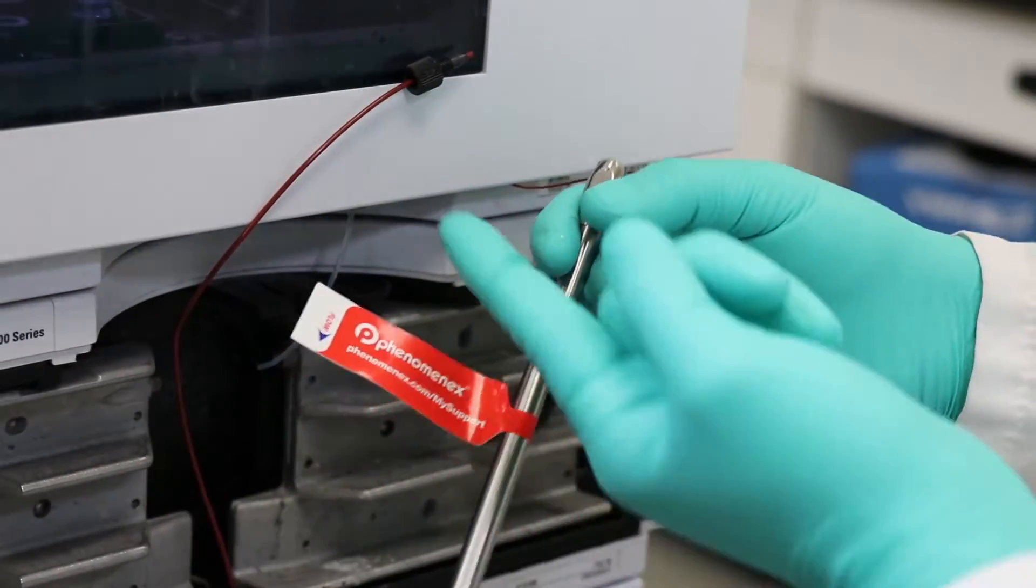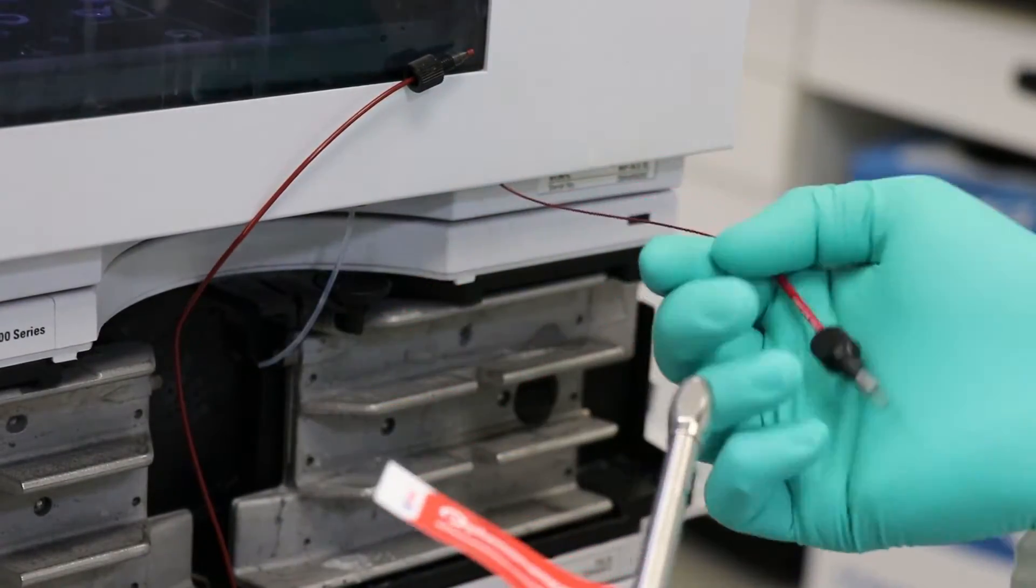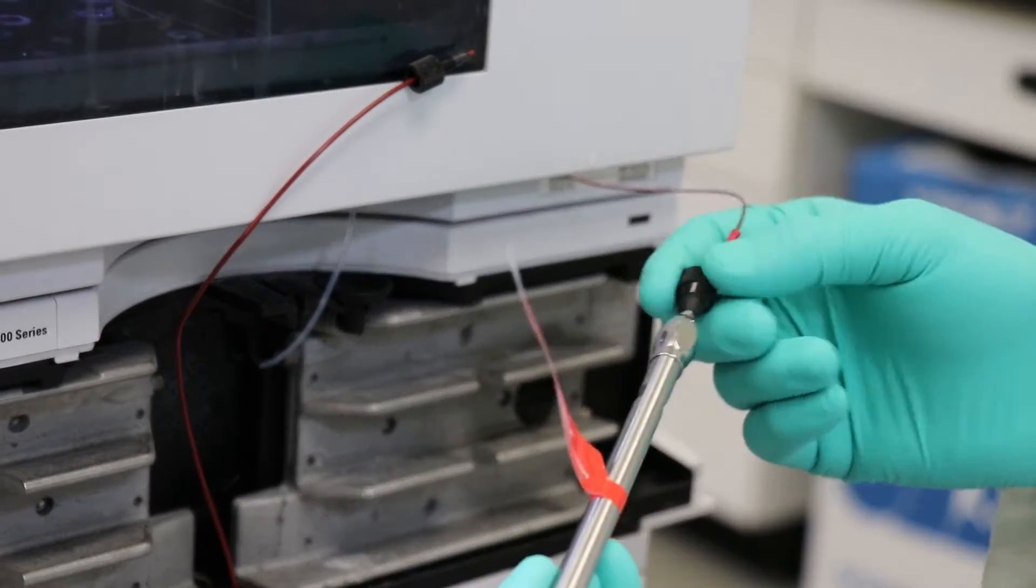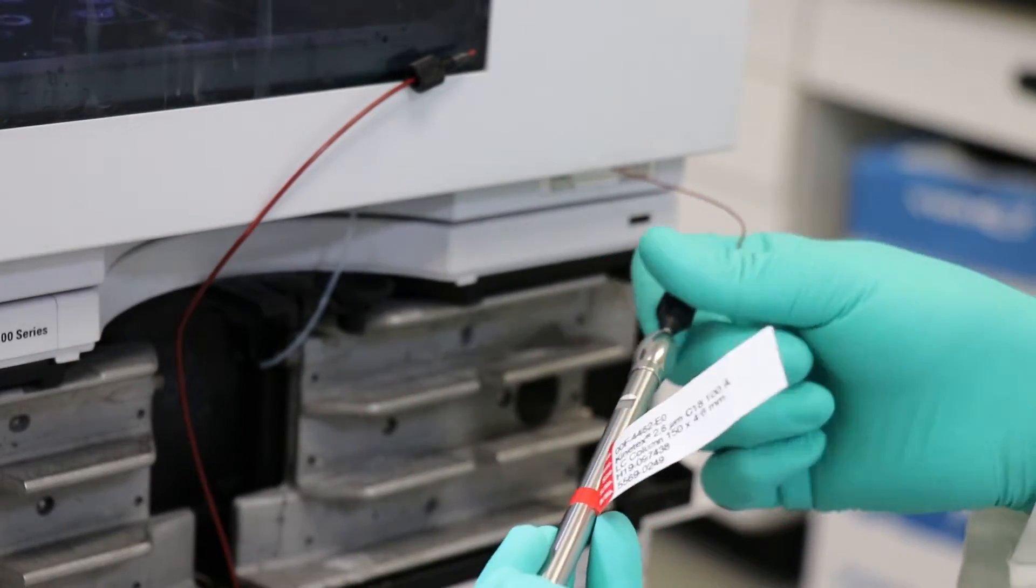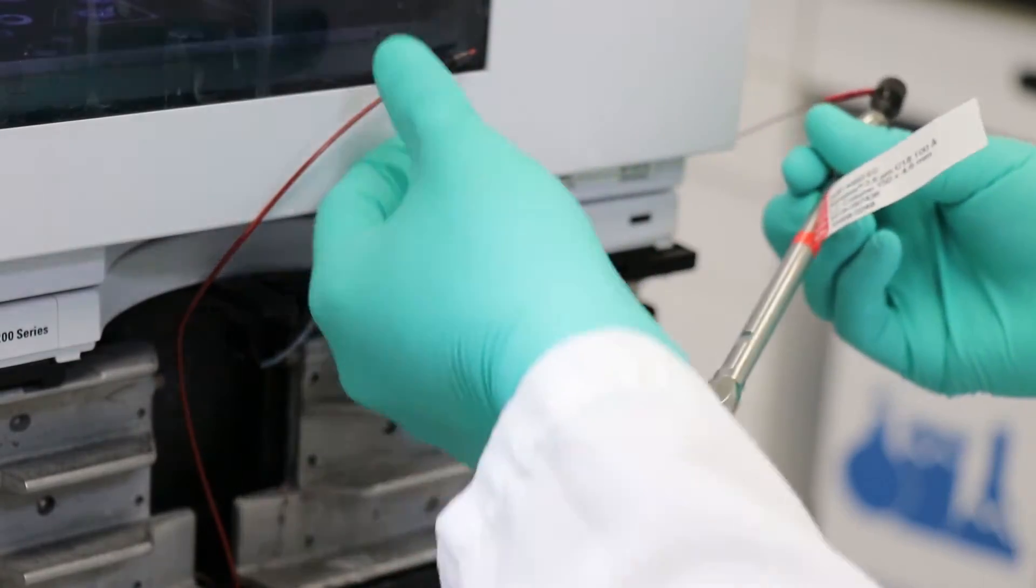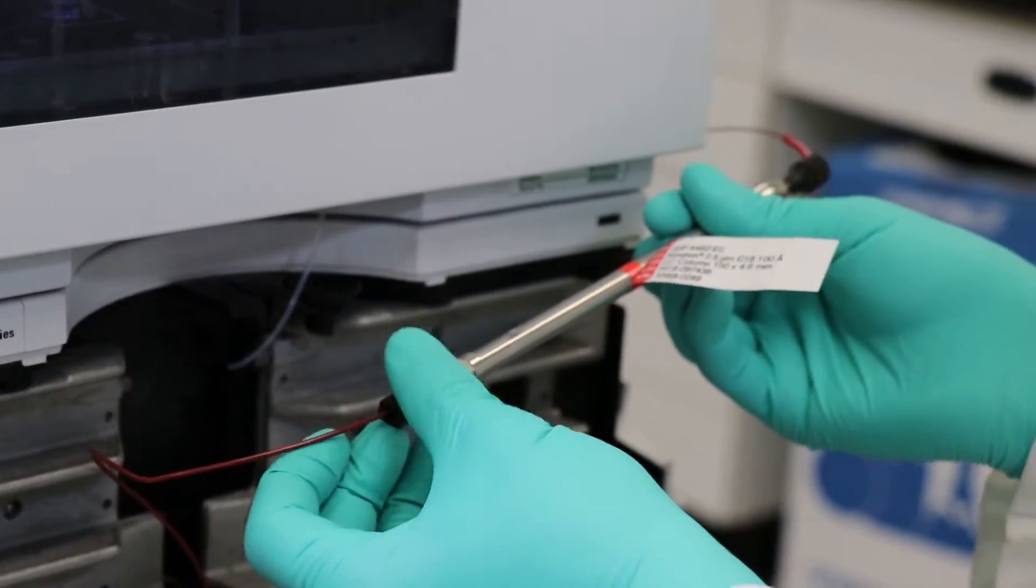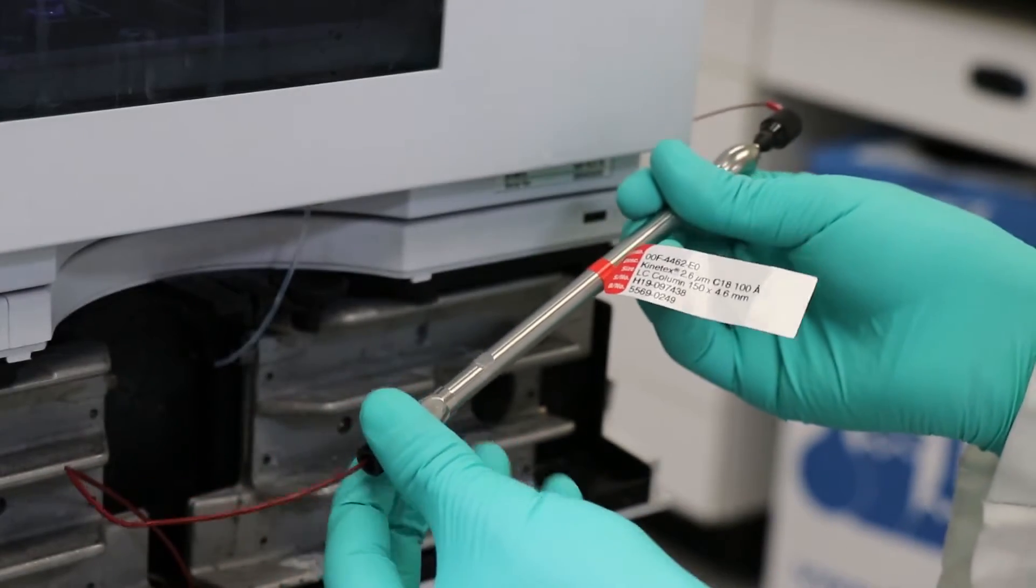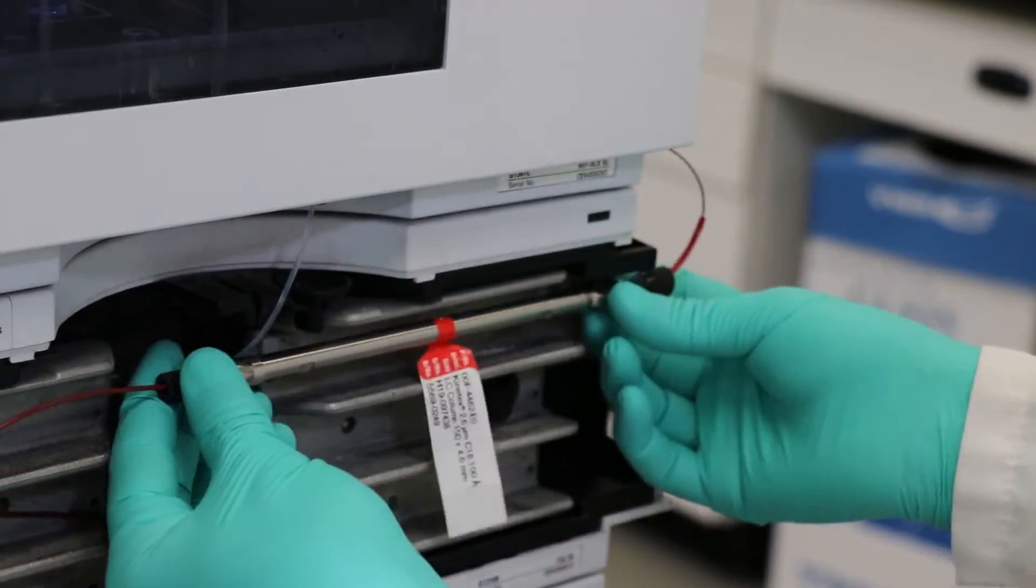Once that's done, we can now go on the correct flow path, install the column, and then run Prodigy Test Mix, also known as PTM, to confirm the efficiency and pressure is back to somewhat normal conditions.